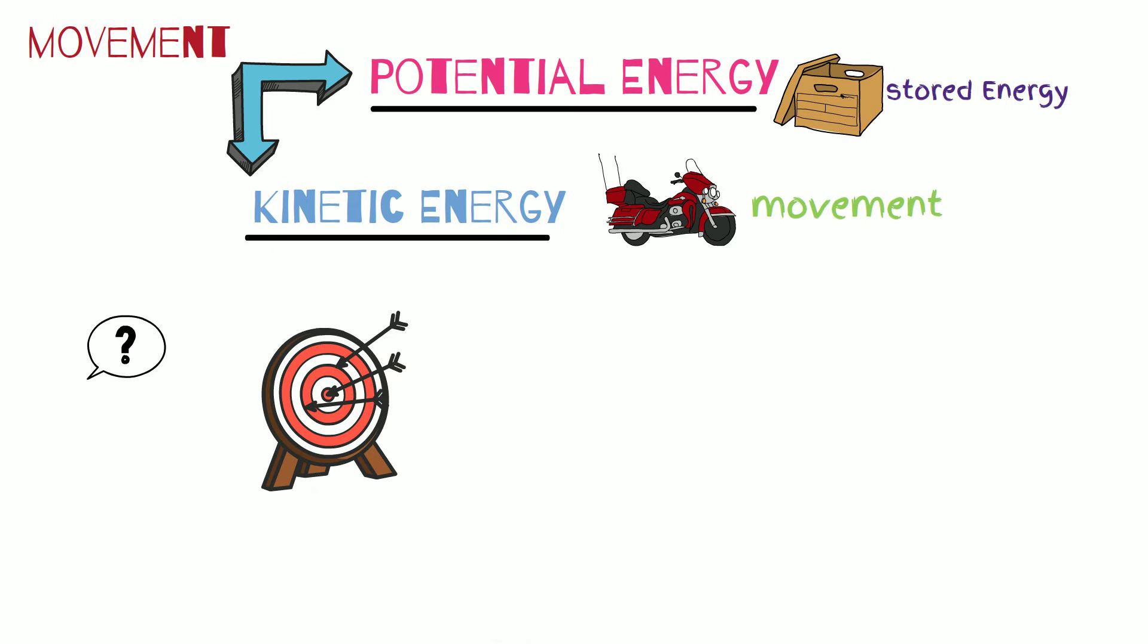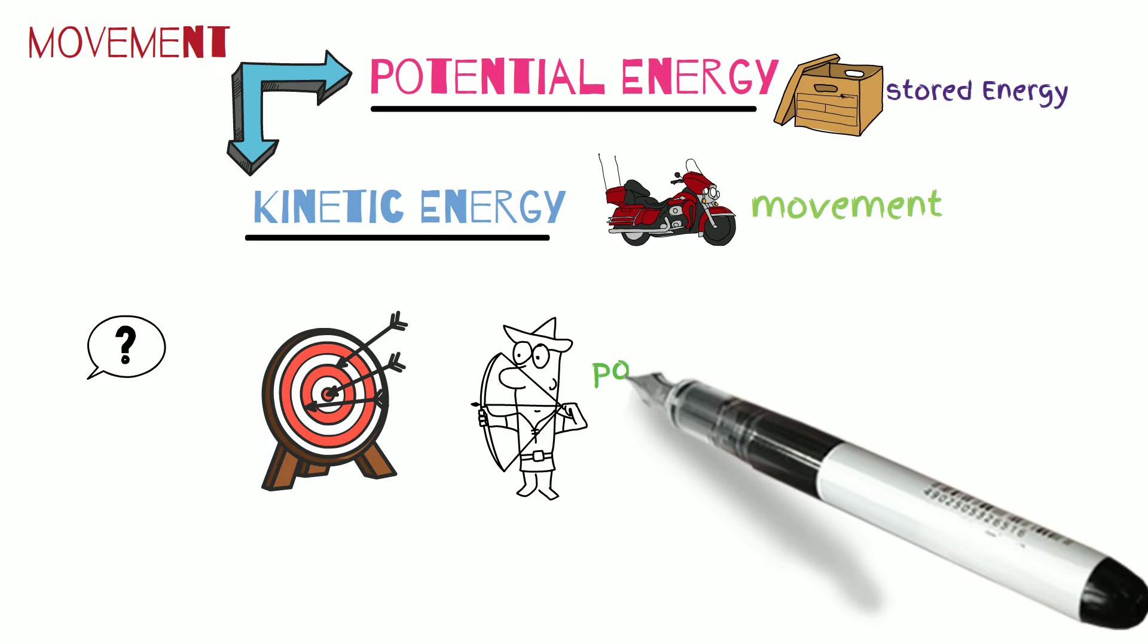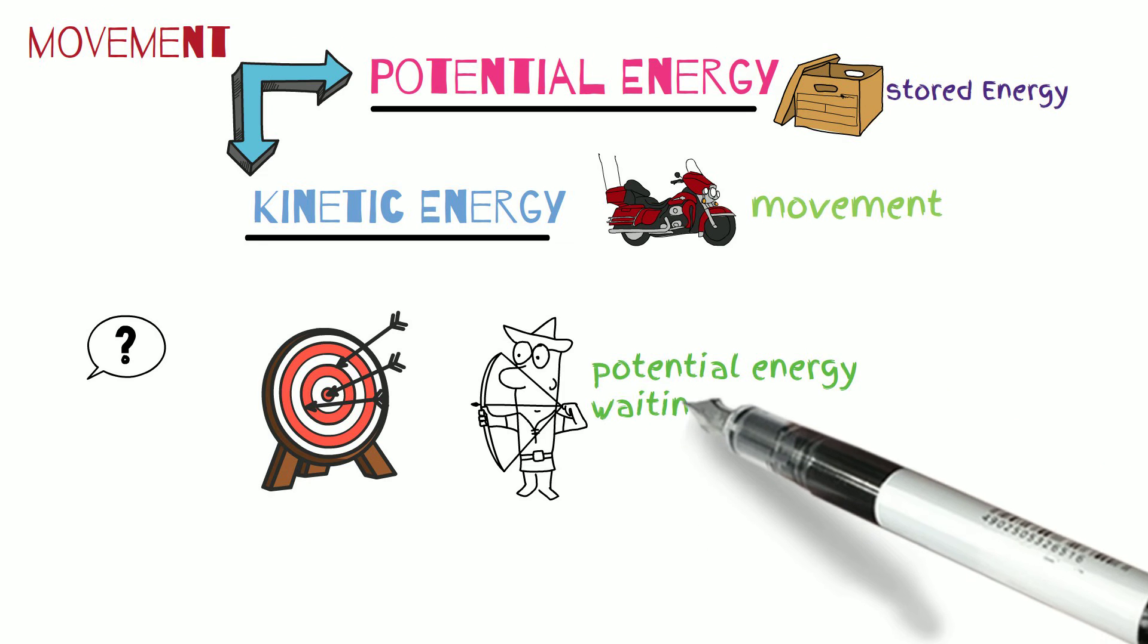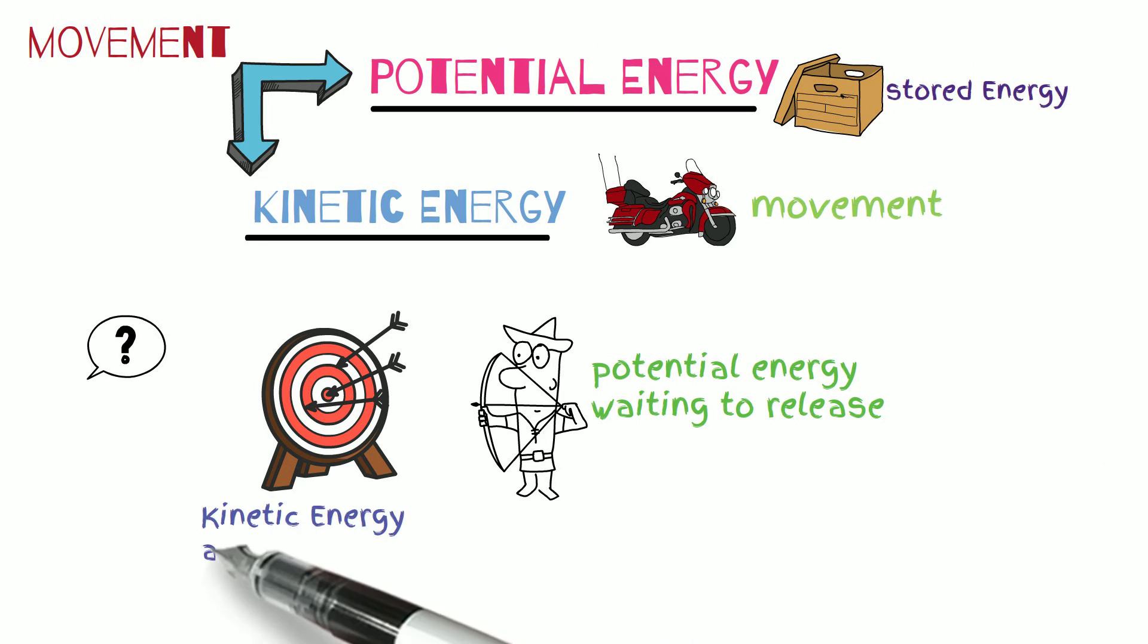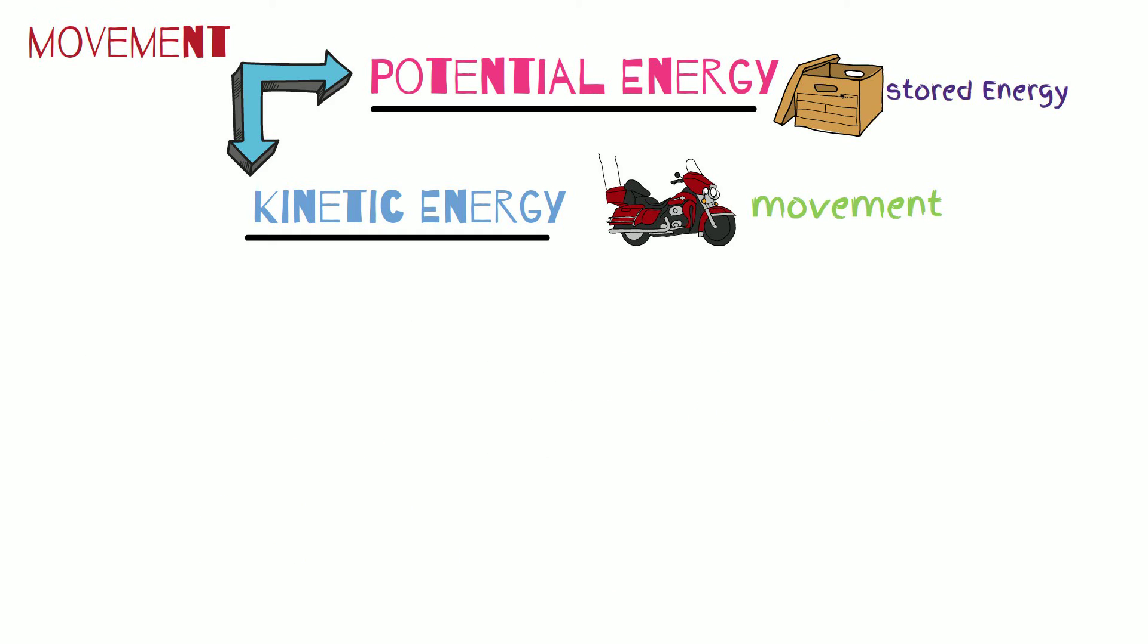A bow and arrow. Before the boy releases the bow and pulls it back this is potential energy. Once he releases the bow this is kinetic energy - movement versus stored energy that has not been used yet.